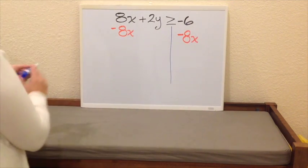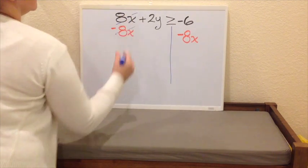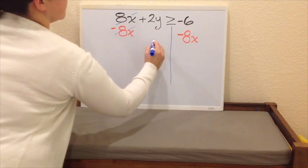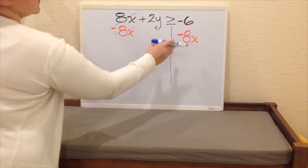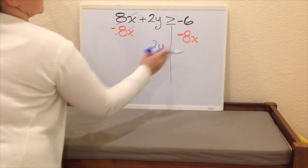What will happen now is that our 8x will disappear because it cancels. We are going to be left with 2y. And on this side, we have negative 6 minus 8x.